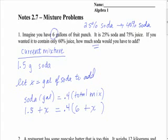Now we have our equation, we just have to solve it. Go ahead and distribute the 0.4. What's 0.4 times 6? Mia? 1.5? No. Grace? 2.4. Good. Plus 0.4x.